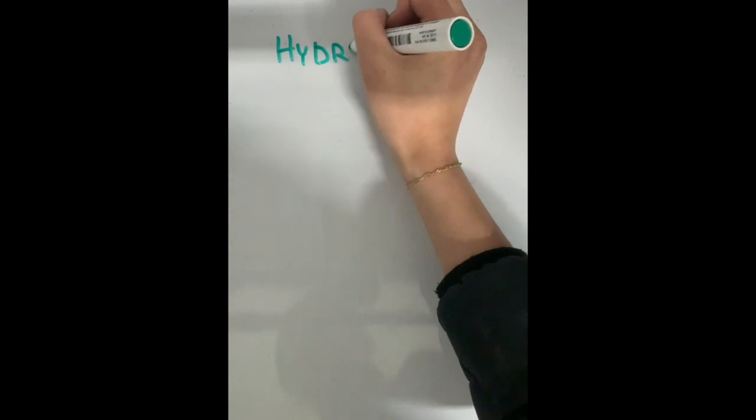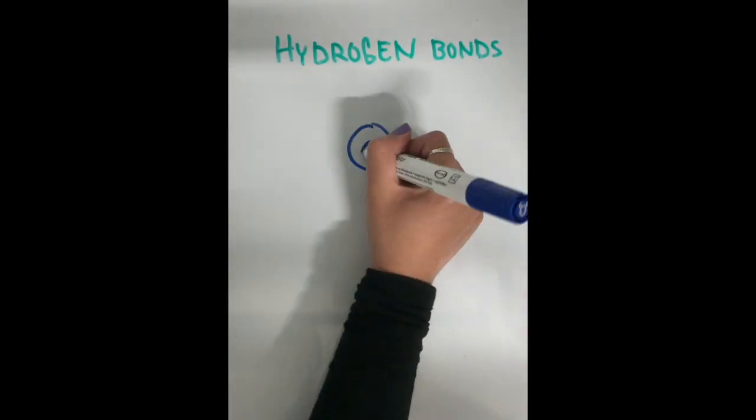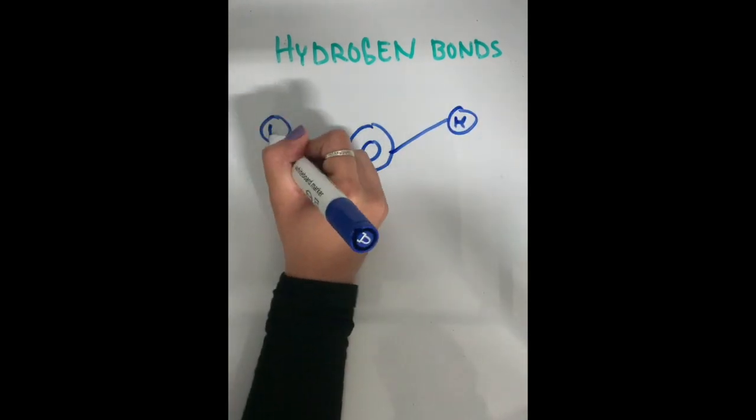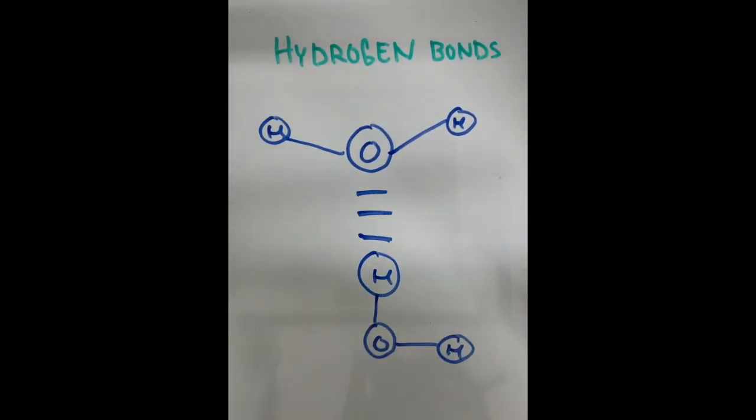Water molecules consist of hydrogen bonds. A hydrogen bond is a weak bond between the oxygen, which is negatively charged of one molecule, with a hydrogen, which is positively charged of another molecule.